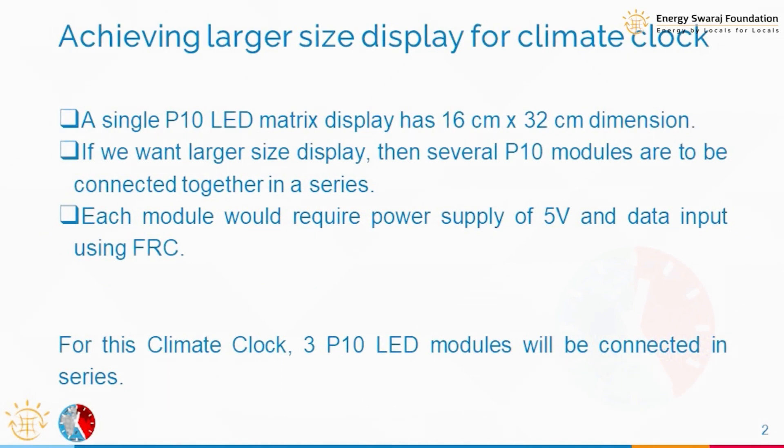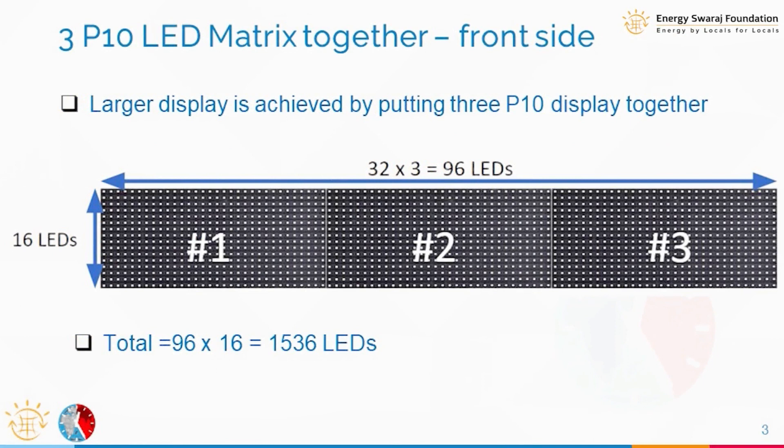We have already seen that one LED display has about 16 by 32 LEDs. So what we are going to do is put these three of them together. 16 by 32, and there are three of them in series, so there are 96 LEDs in a row and 16 in a column. When you put them together, you will get 1536 LEDs all together.